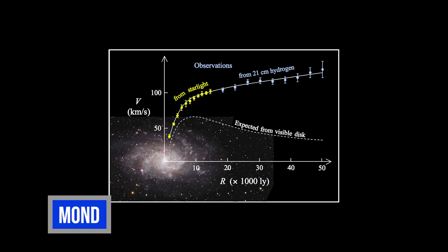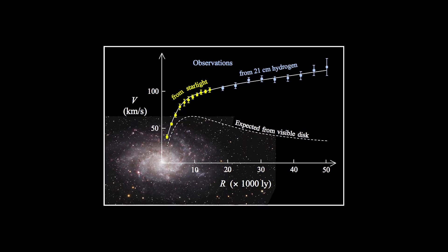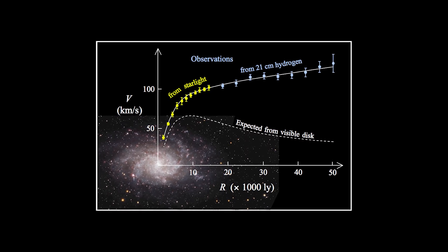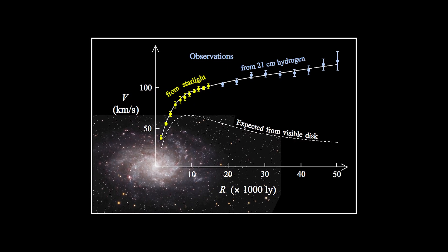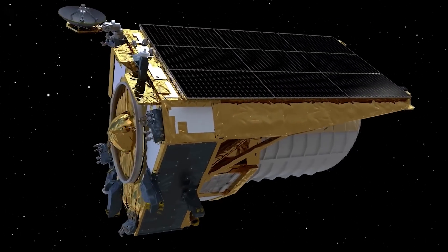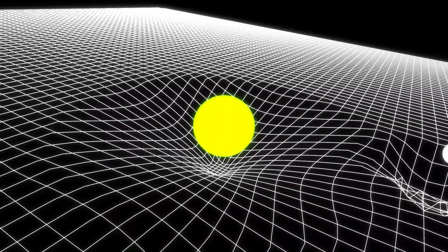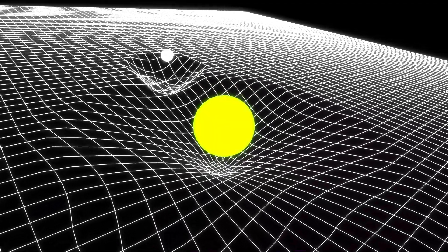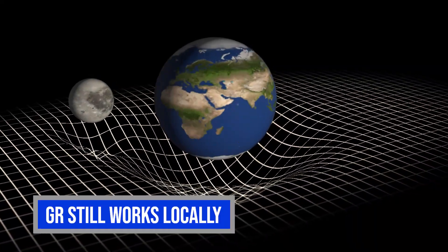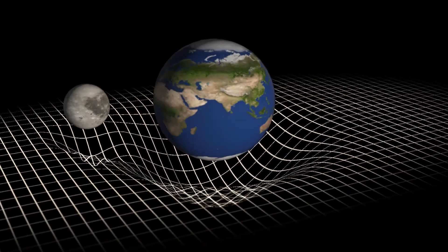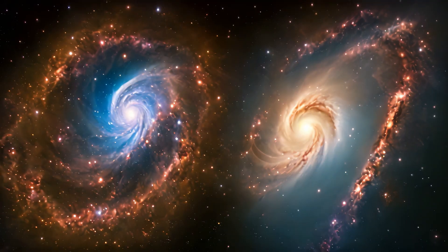This brings MOND, modified Newtonian dynamics, into focus, a theory that tweaks gravity's law at low accelerations. Webb's early data seems to support MOND more than Einstein's general relativity when dealing with whole galaxies. GR still works locally, like near Earth or Sun, but on cosmic scales, things don't match.